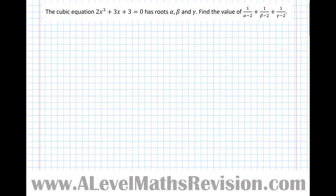Now notice, what we're being asked to find is the sum of three roots, but they've all been transformed in the same way. They've had two taken from them, and then the reciprocal's been found. When we're asked to find the sum of transformations of roots like this, when the same thing has been done to all three roots, that makes possibly a substitution method the more favourable and efficient option.